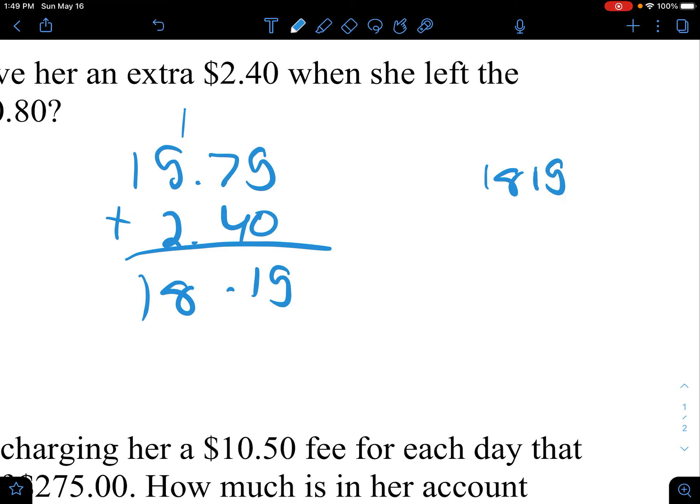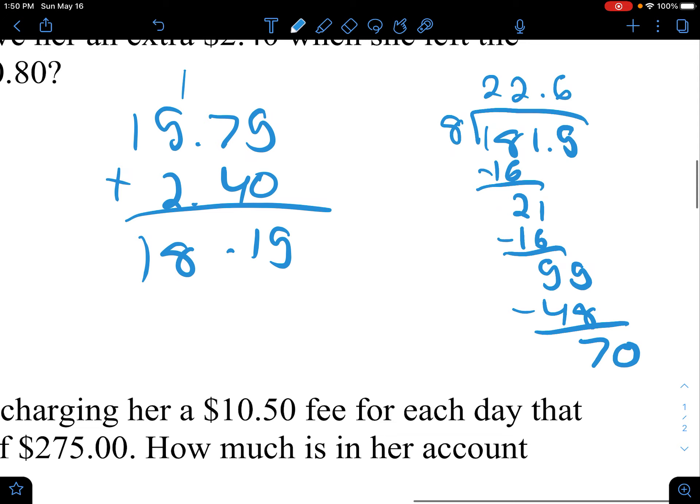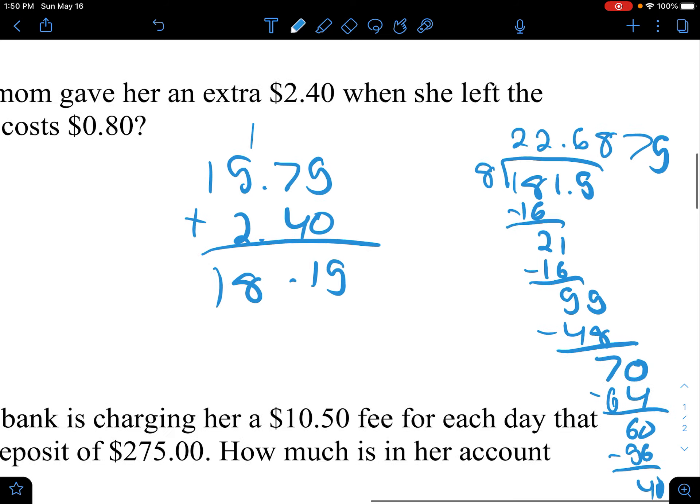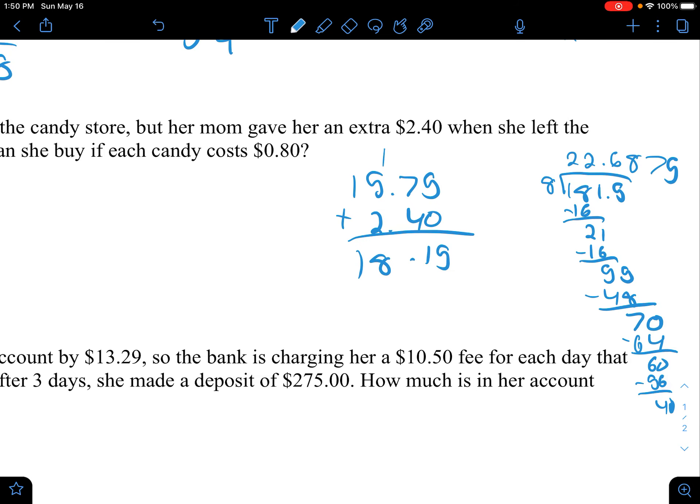How about, yeah. So now, we solve the equation. Looks like we'll have to round it. Okay, so we got our answer. She'll be able to buy 22 pieces of candy.